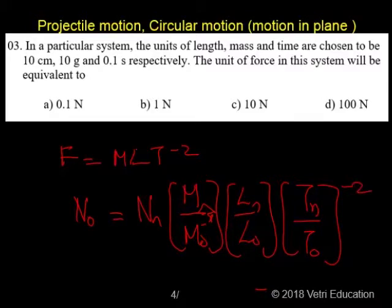Now we have to substitute values. M_n, M_o we have to substitute. What is the N_m? This is not given any value, so we can take it as 1.